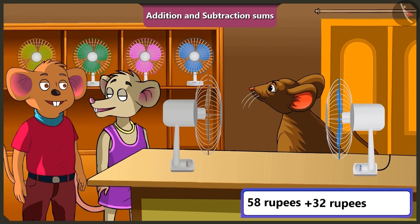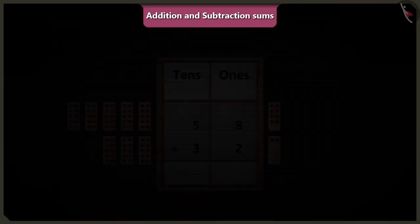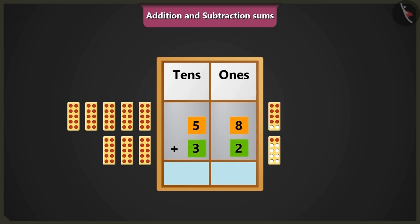So total, how many rupees would you have? To know that, we would have to do the addition of 58 and 32 after putting them in the box of one-tenths. Yes.